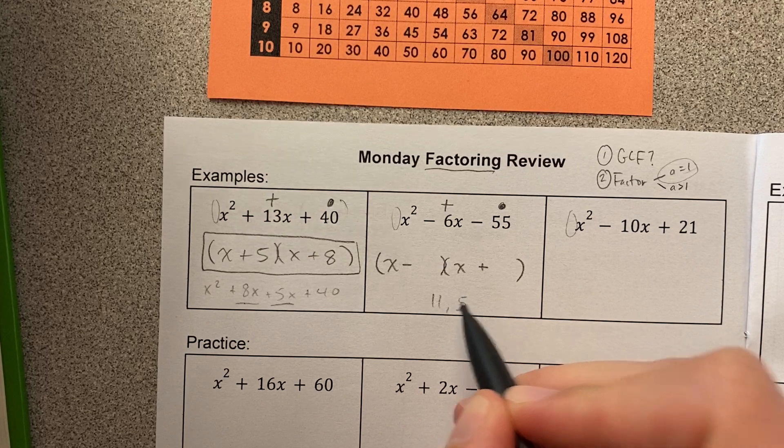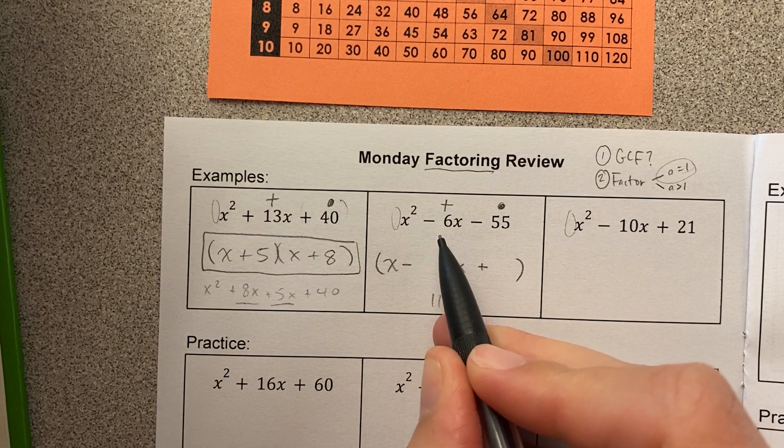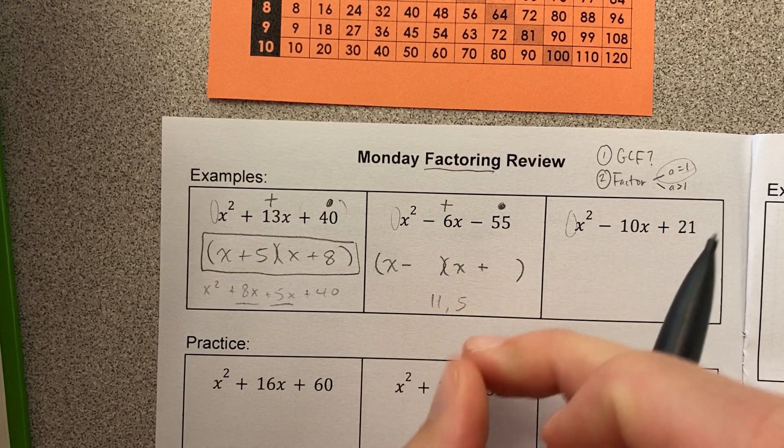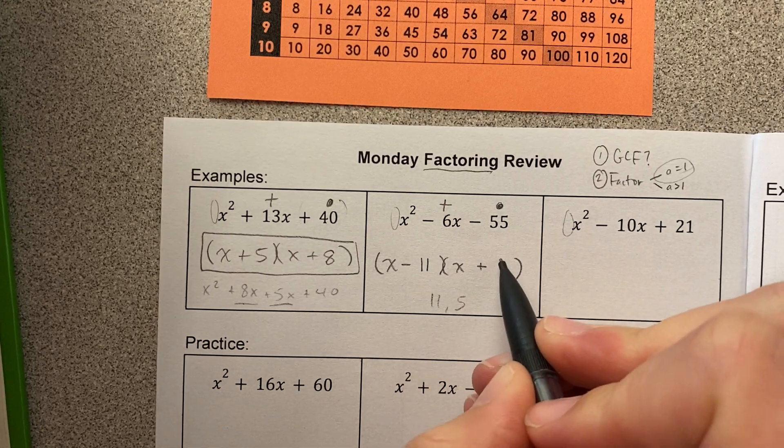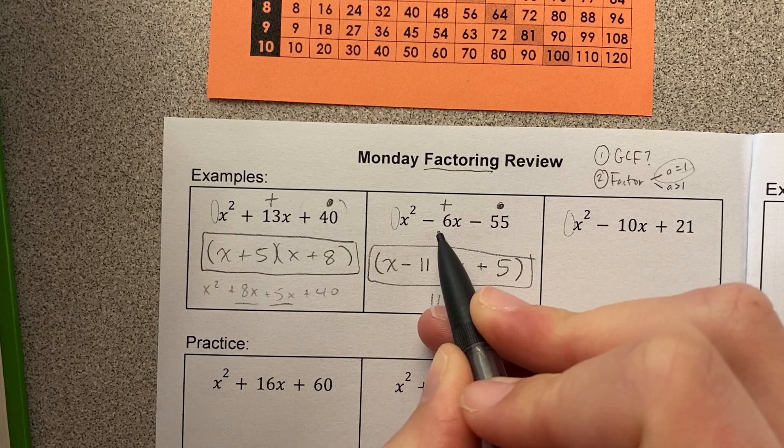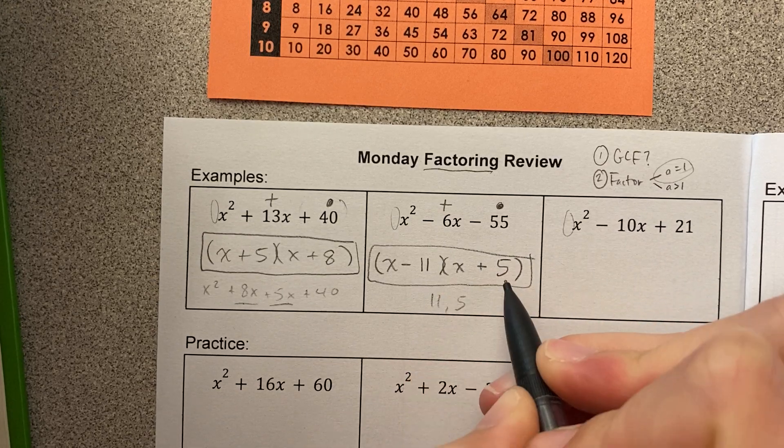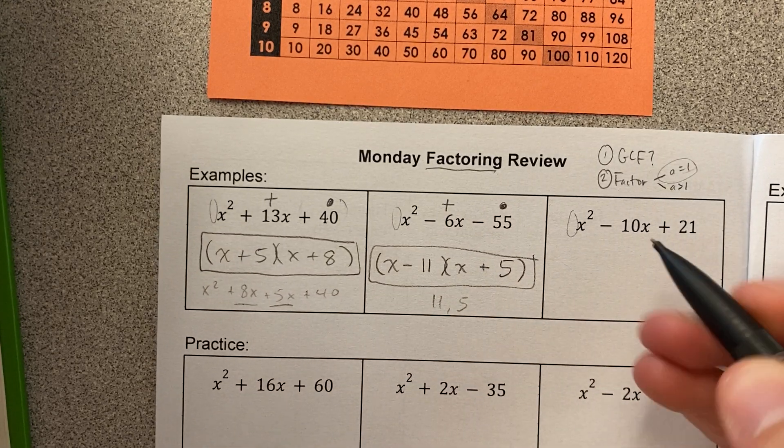So I'm gonna use 11 and 5. I want them to add to a negative number, so when I add them, I have more negatives than positives. So I'm gonna take my larger number and make it negative. Had this been plus 6, I would have taken my larger number, 11, and made it positive.